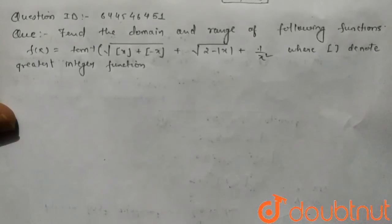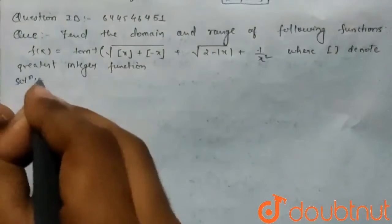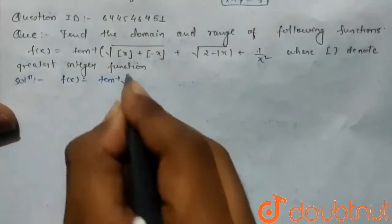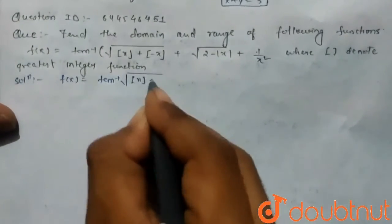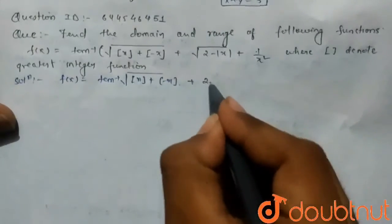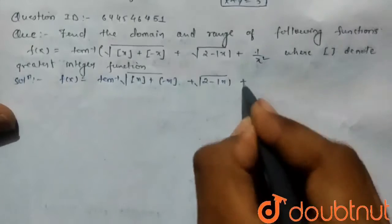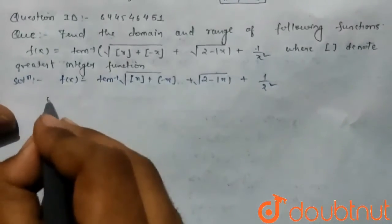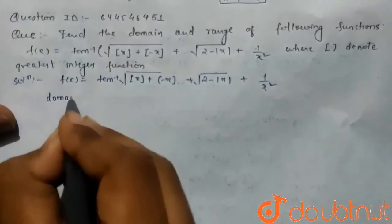In solution part, the function f(x) is tan inverse of square root of greatest integer function of x and greatest integer function of minus x plus square root of 2 minus mod x plus 1 by x squared. We know that for finding domain, first we check that in root the value should not be negative.